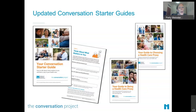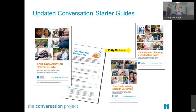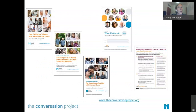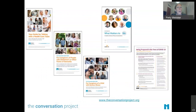We used to have five guides; we now have six. We have our flagship conversation starter guide for anybody to think about what matters most to them. We've split the proxy guide into two — one on choosing a healthcare proxy and one on being a healthcare proxy. We also have guides for caregivers: one for those caring for people living with Alzheimer's and other forms of dementia, and one for caregivers of children with serious illness. There's also a guide for talking with a healthcare team.